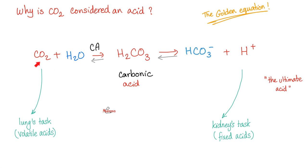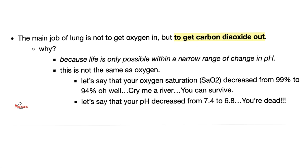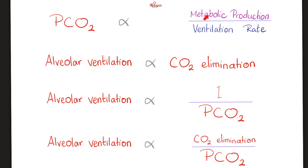Carbon dioxide is an acid because it gives you carbonic acid. And that's why we have said before, the main function of the lungs is not to get the oxygen in. The main function is to get carbon dioxide out lest you should die from acidosis. That was deep. The main job of the lung is to get carbon dioxide out because life is only possible within a narrow range of change in pH. We have talked about this before. The numerator is the kidney's job. The denominator is the lung's job.